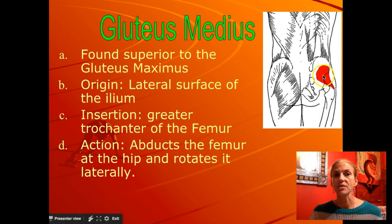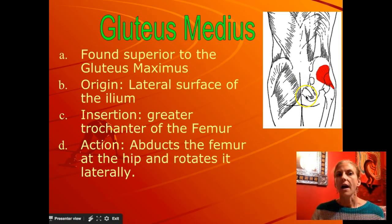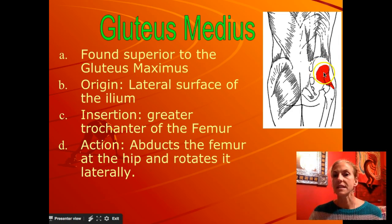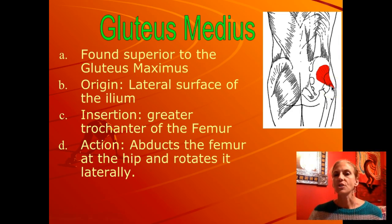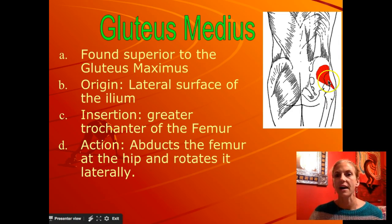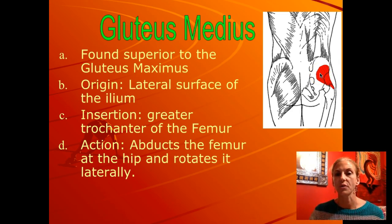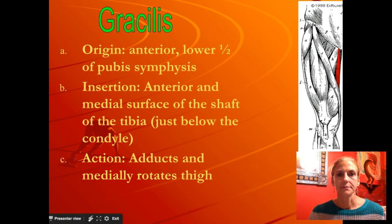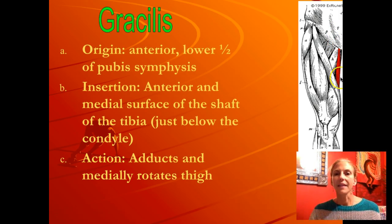The gluteus medius is a little bit superior to the maximus and doesn't have quite the medial origin. It originates on the lateral surface of the ilium — here's your hip, the whole pelvis. Notice the diagonal movement and where it's attaching right here on the top of the femur. Picture that leg rolling out to the outside: this causes an abduction of the femur, pulling it away from the midline. Because of that diagonal, it also laterally rotates the hip.